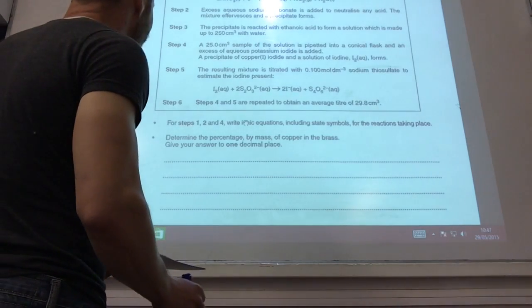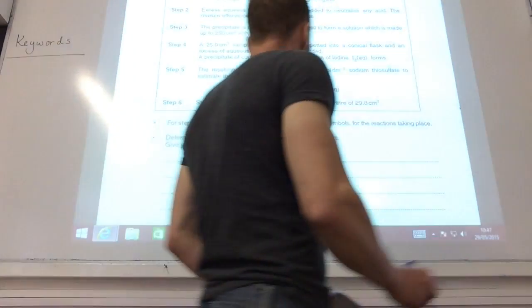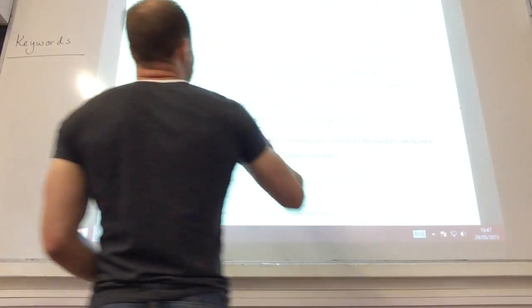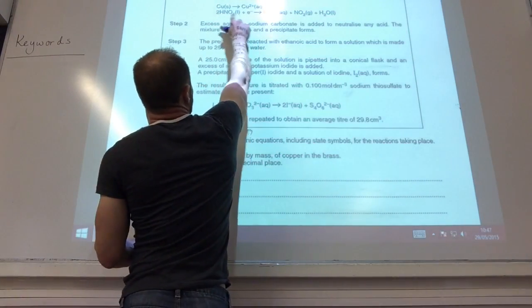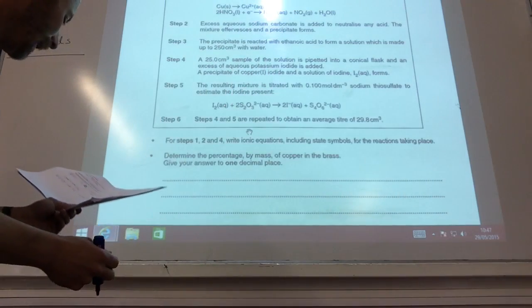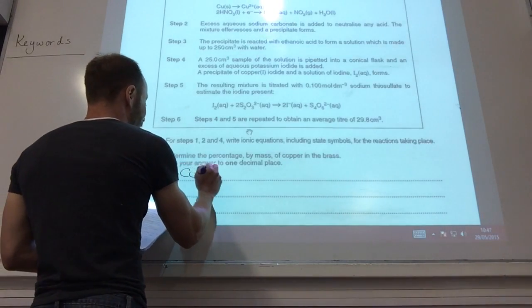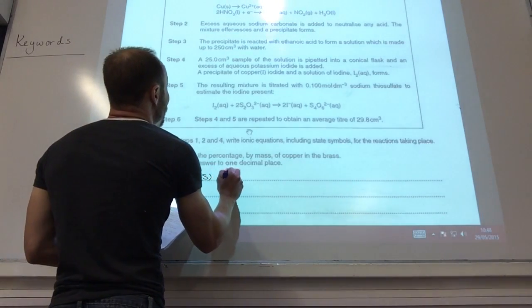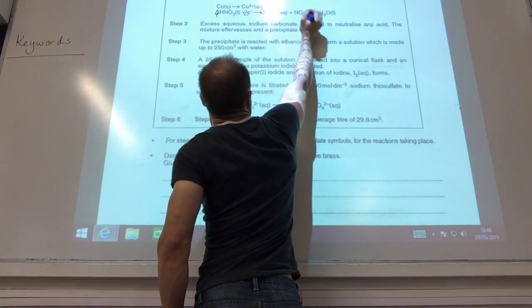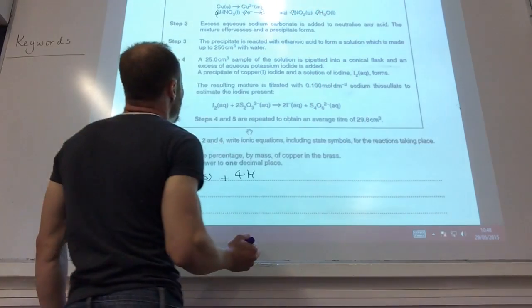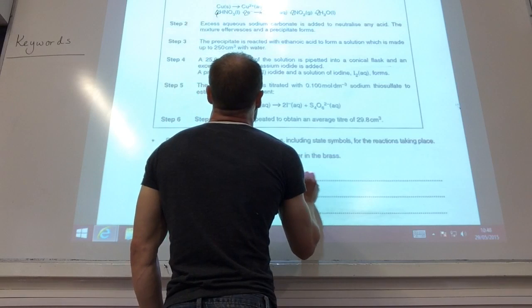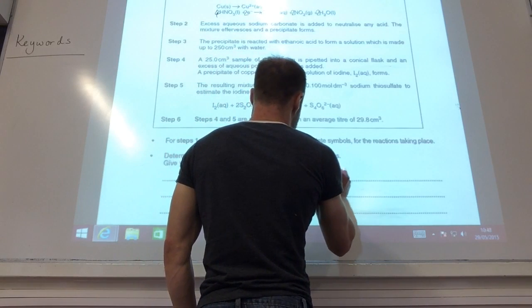So I now need to write equations for steps one, two, and four. So they've given me the half equations. I need to, obviously, times this one by two, all the way across, and then add them together. So if you do that, they've given me the symbols. So copper plus four, because that will become four, that becomes two, that becomes two, that becomes two, and that becomes two.